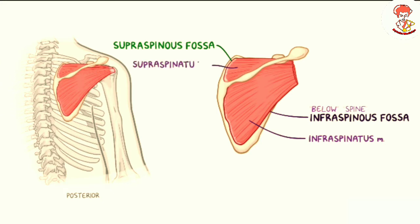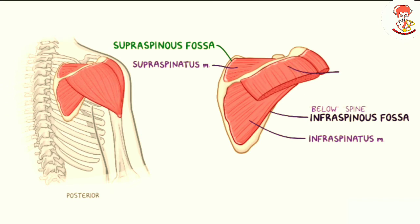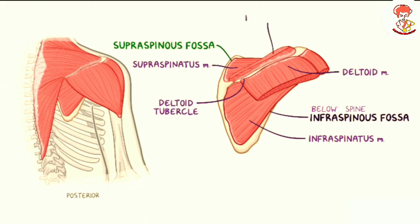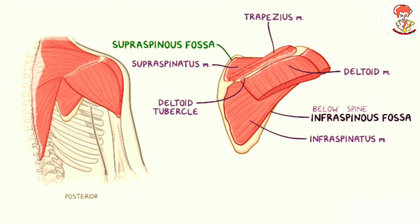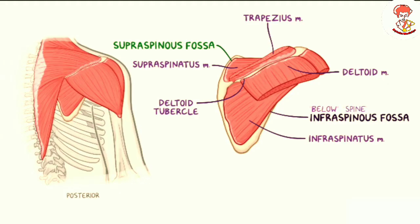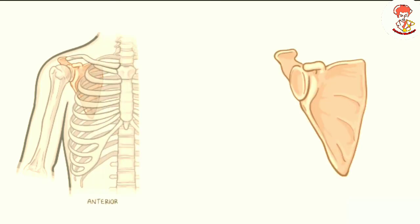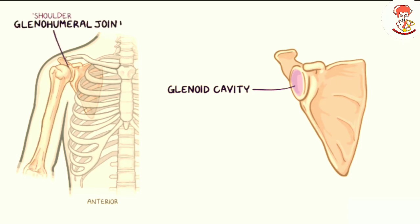The space above the spine is called the supraspinous fossa, and as you might have guessed, it is an attachment point for the supraspinatus muscle. The spine of the scapula also has an attachment point for the deltoid muscle on the deltoid tubercle of the spine, in addition to an attachment for the trapezius muscle. Inferior to the coracoid process, on the superior lateral surface of the scapula, there is the glenoid cavity, which is a shallow cup-like fossa facing the lateral side.